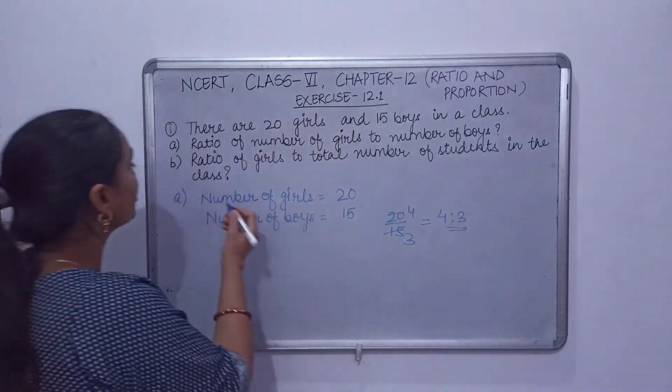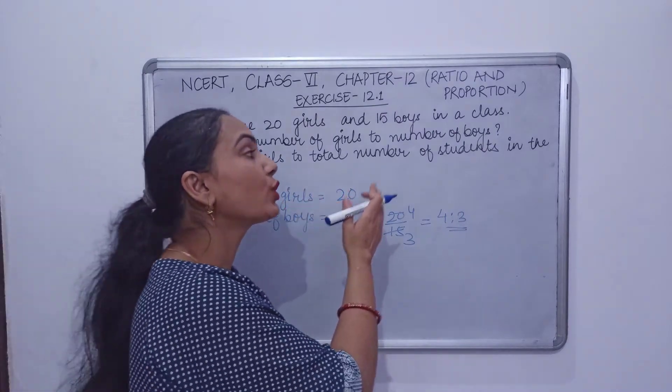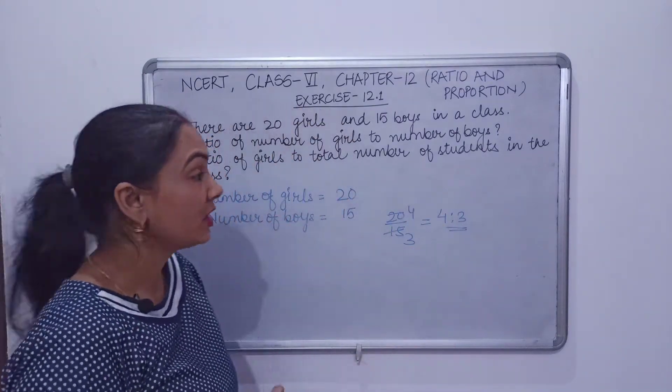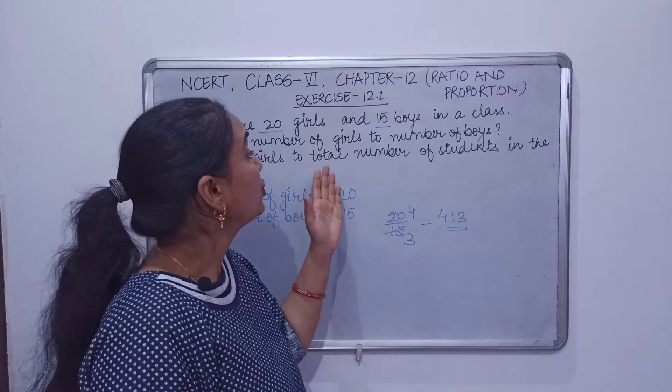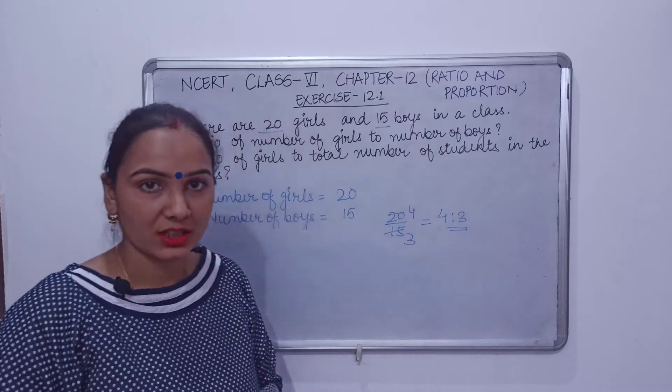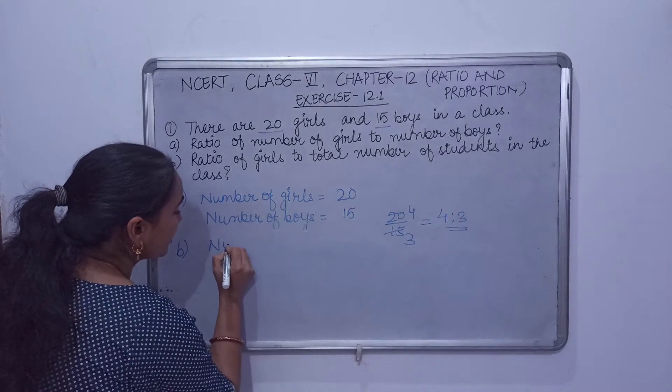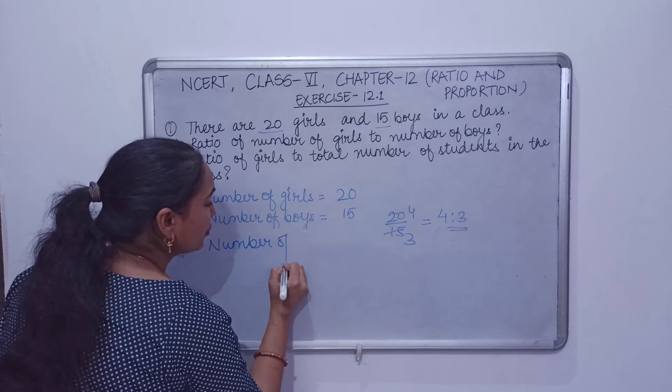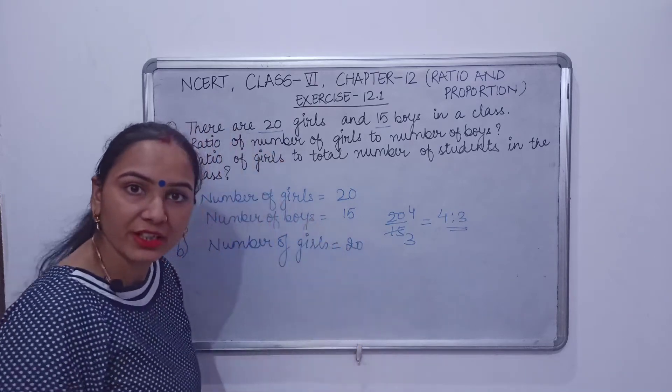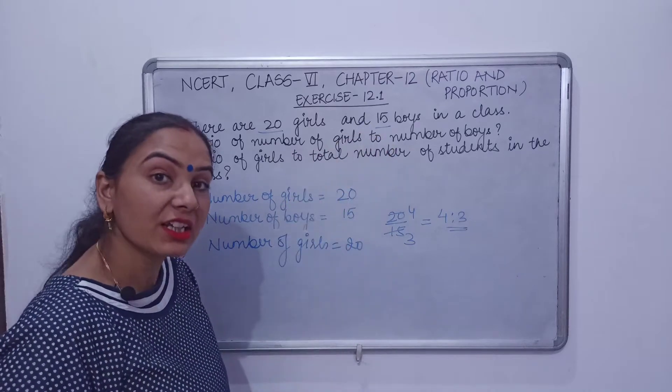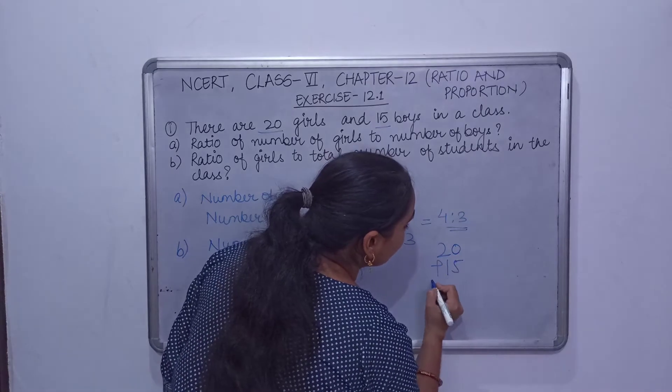So now come to the second point, which is ratio of girls to the total number of students in the class. So in the second point, we have written ratio of girls to total number of students in the class, right? Number of girls already given, which is 20.